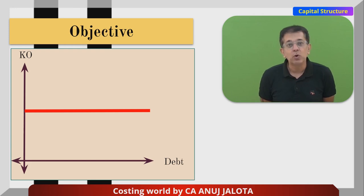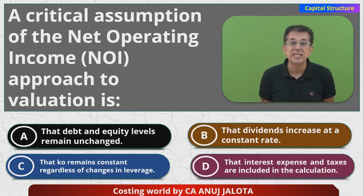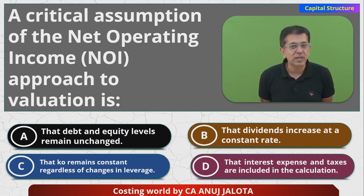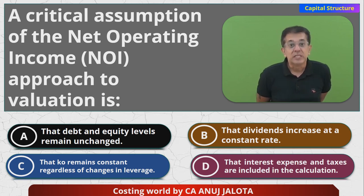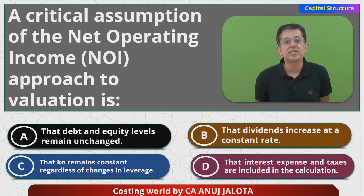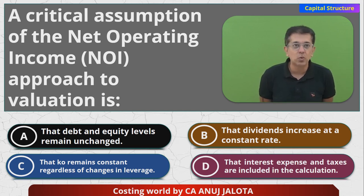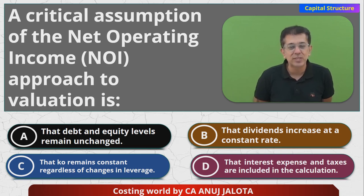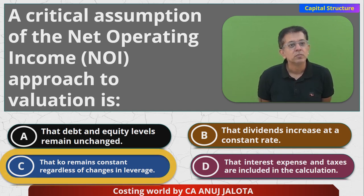Therefore, a critical assumption of NOI theory is that Ko remains the same irrespective of debt-equity mix, or Ko remains the same irrespective of changes in leverage. Now evaluating the options: (A) debt and equity levels remain unchanged — no, equity levels will keep changing; (B) dividends increase at a constant rate — no, dividends remain constant, they don't increase at a constant rate; (D) interest expense and taxes are included — no, taxes are ignored in NOI theory, the tax rate is assumed to be zero. So the correct answer is (C): Ko remains constant regardless of changes in leverage.